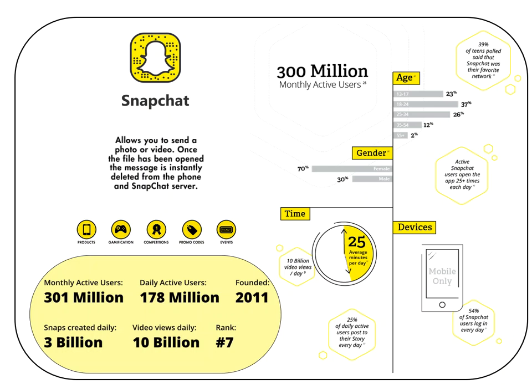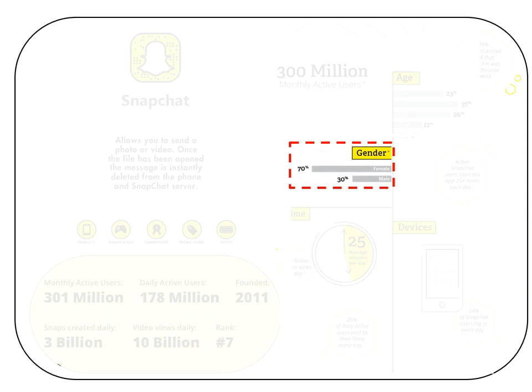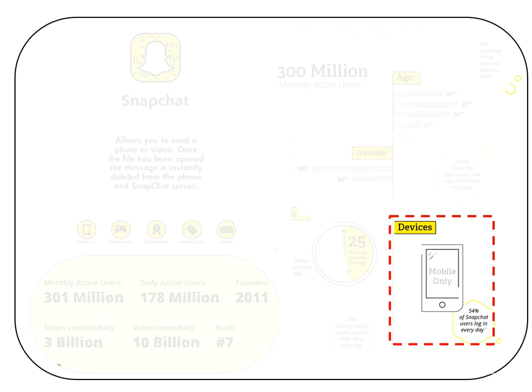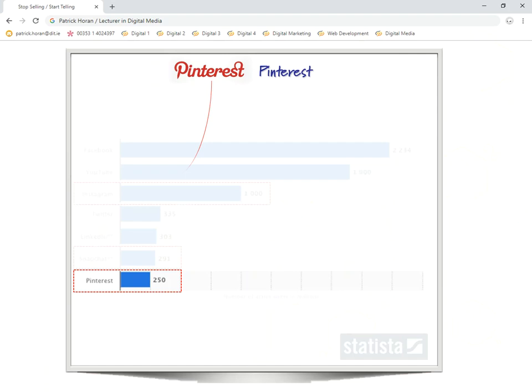This time-limited, exciting element was so unique that other channels introduced 'stories' to compete with it. Looking at the age group, Snapchat skews younger than Instagram — it drops off fairly sharply at a certain age, and people often say they feel 'too old' for Snapchat. The gender split is 70% female and 30% male. It is completely geared towards mobile devices, and the average minutes spent per day is actually longer than on Instagram, likely influenced by the younger demographic.